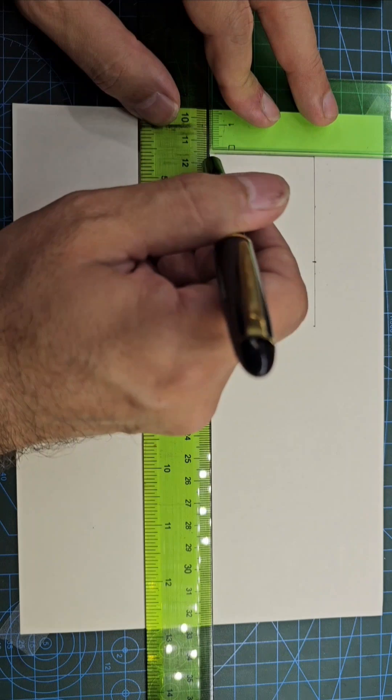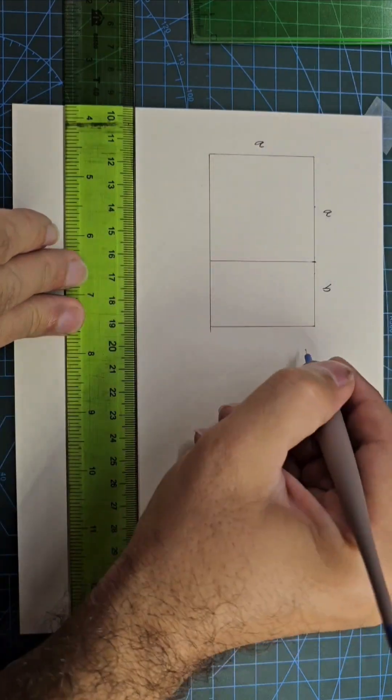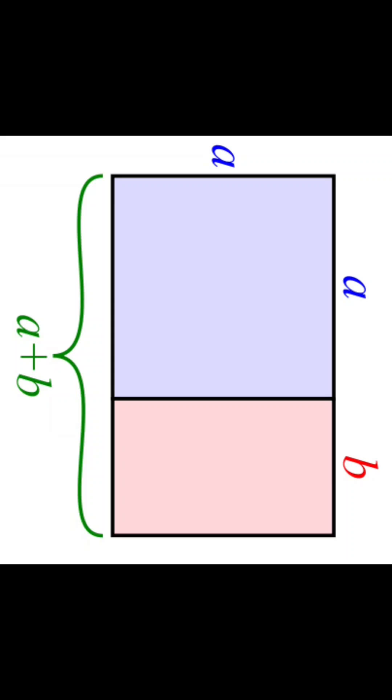You can also draw the golden rectangle using the same method, which has the golden ratio between all of its sides.